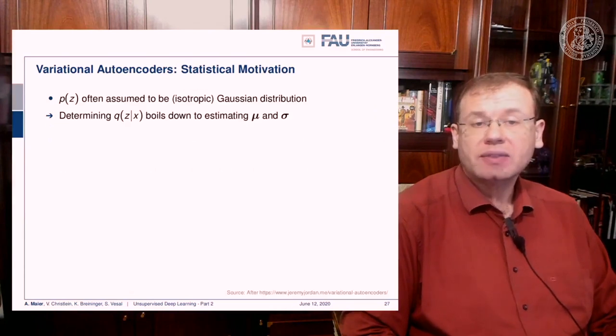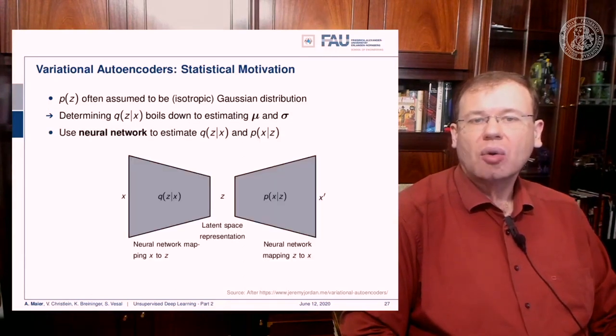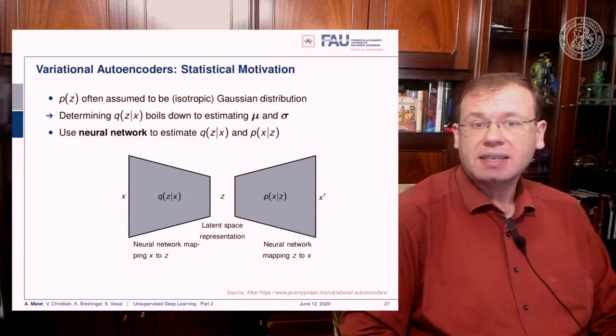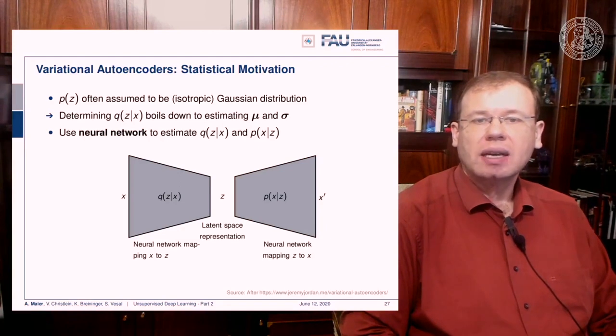So now p of z is often assumed to be the isotropic Gaussian distribution, and determining now q of z given x boils down to estimating the parameter vectors mu and sigma. So we do this using a neural network, who might have guessed that, and we estimate our q of z given x and p of x given z. So here you see the general outline again. You see this autoencoder structure, and we have this encoder q of z given x that produces the latent space representation, and then our p of x given z that produces again our output x prime, and x prime is supposed to be similar to x.